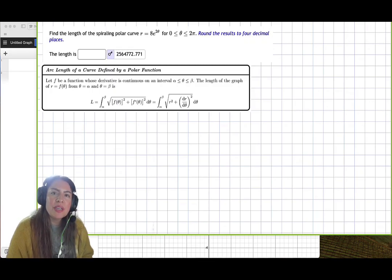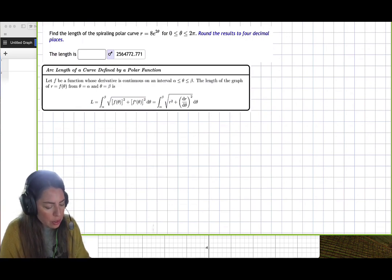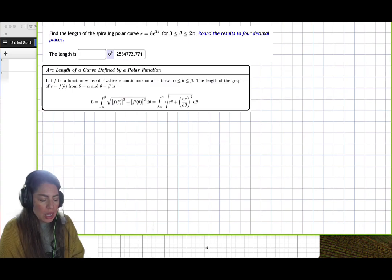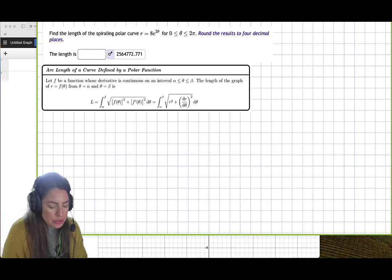In this example, we're going to find the arc length of a polar curve over a certain interval. Here we have a polar curve that is represented by r equals 8 e to the 2 theta, and they give us the interval, the closed interval 0 to 2 pi.